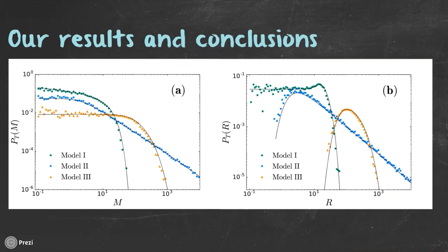Starting from the standard results for Brownian motion, we were able to find exact analytical expressions for the probability density function of the maximum and the range of the three random diffusivity processes discussed before. The results are shown in this plot together with numerical simulations. As you can see, the agreement is excellent.